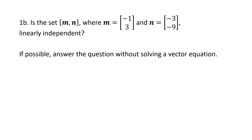Next we have a set of two vectors and we want to know whether the set is linearly independent. We discussed this case as well: a set of two vectors is linearly independent exactly when neither vector is a scalar multiple of the other.